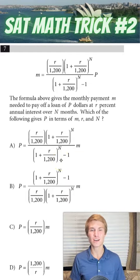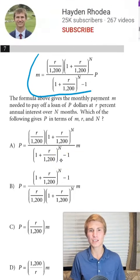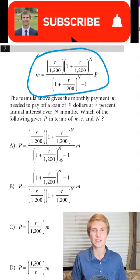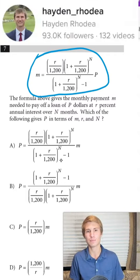Here's an SAT math trick you can use to save a ton of time on the SAT. If you see you have an equation like the one given above set equal to a bunch of different variables, in this case it's M being set equal to R, N, and P.